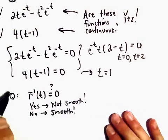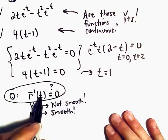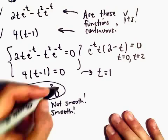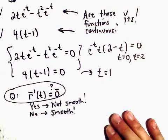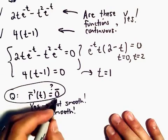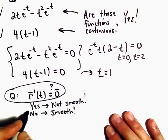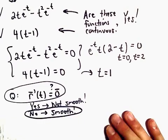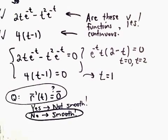So to answer our question, is there a value of t so that the derivative equals the zero vector? In this case, the answer is no. So that would tell us that our curve is, in fact, smooth.